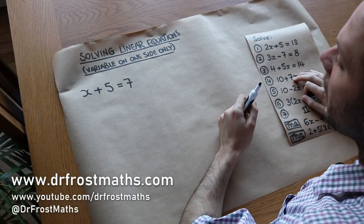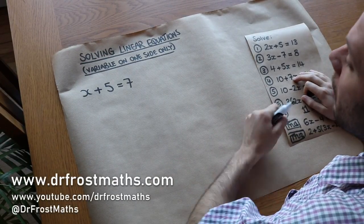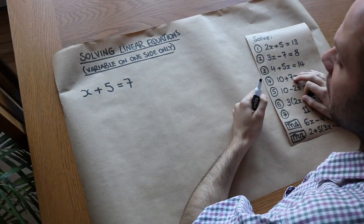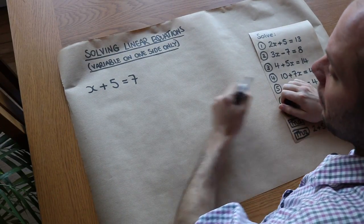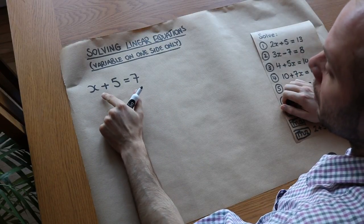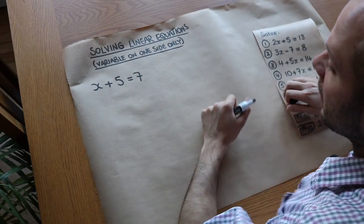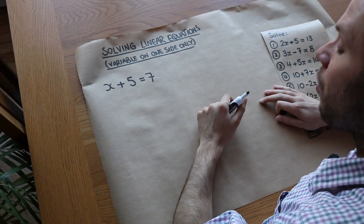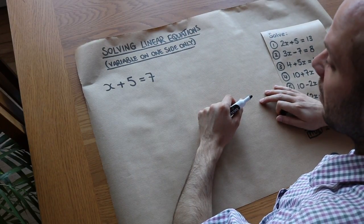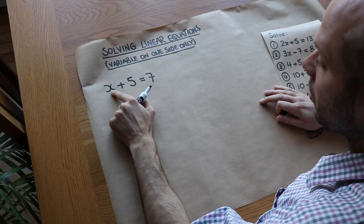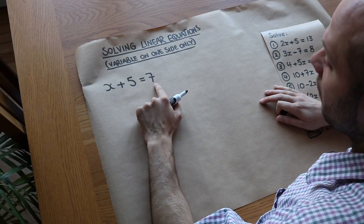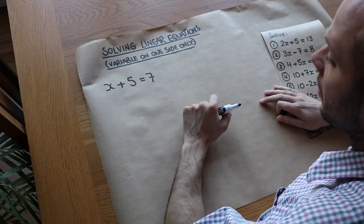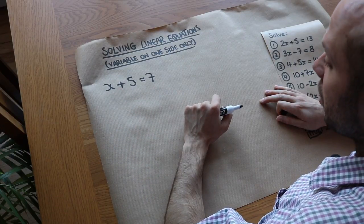Hello and welcome to this video on solving linear equations where the variable appears on one side of the equation only. What does it mean to solve an equation? It just means to find the value of whatever variable you have in the equation. So in this case we've got an equation and we want to find the value of x. Often you can do these things just by inspection — you'd think, well, what plus 5 would give you 7? And you realize that's just 2. 2 plus 5 gives you 7, so the value of x is equal to 2.